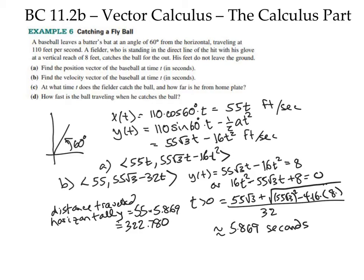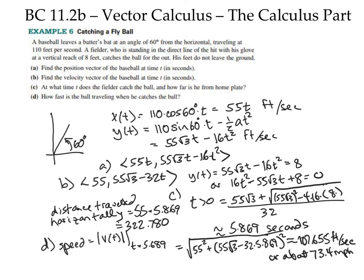Now, how fast is the ball? Well, that's speed, and speed is the magnitude of the vector. So to find speed, I use the following. So the ball was traveling about 73.4 miles per hour when the fielder caught it. All right, that's a pretty good introduction to a nice example of so-called vector calculus. You'll notice it really is very much like parametric motion.